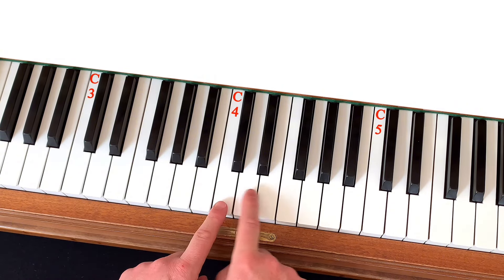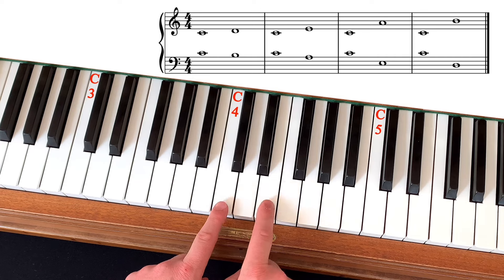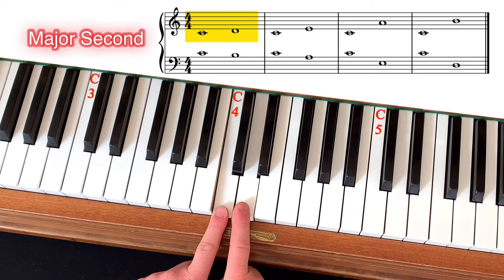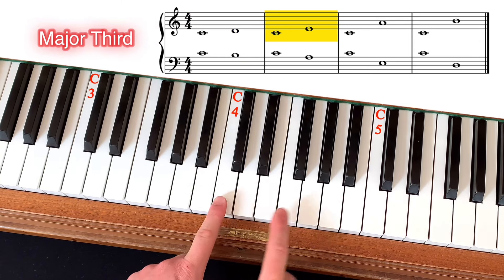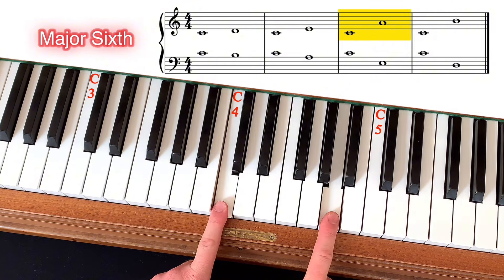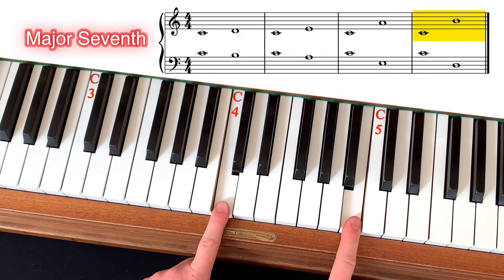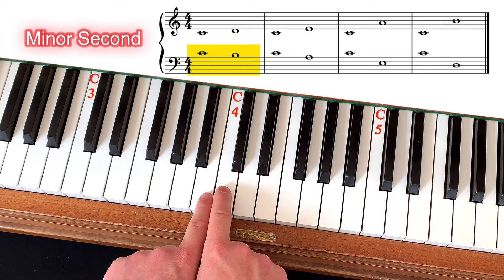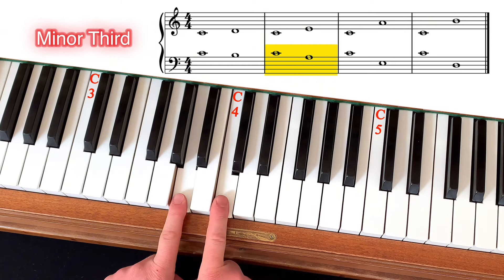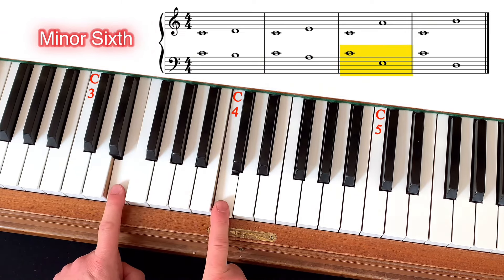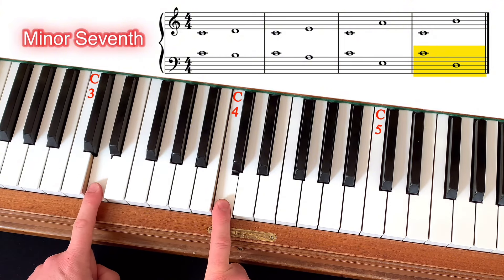When we go upwards, the remaining intervals are: two keys — the major second; three keys — the major third; six keys — the major sixth; seven keys — the major seventh. And when we go downwards: two keys is the minor second, three keys the minor third, six keys the minor sixth, and seven keys the minor seventh.